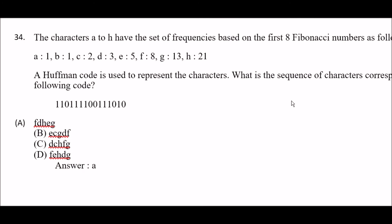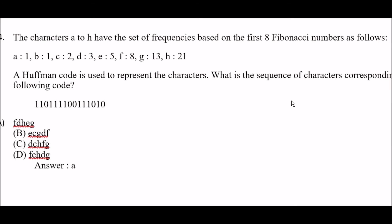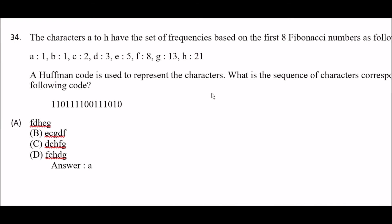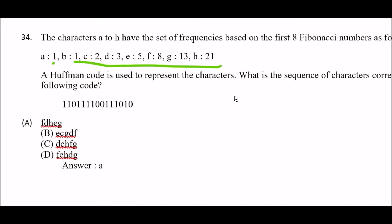The next question: characters A to H have a set of frequencies based on the first eight Fibonacci numbers. A Huffman code is used to represent these characters. What is the sequence of characters corresponding to the given code? Option A: F, D, H, E, G. Option B: E, C, G, D, F. Option C: D, C, H, F, G. Option D: F, E, H, D, G. The right answer is option A — F, D, H, E, G.